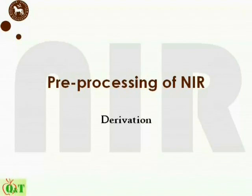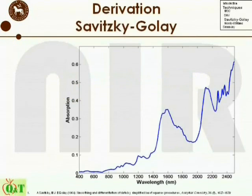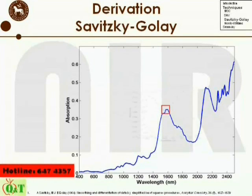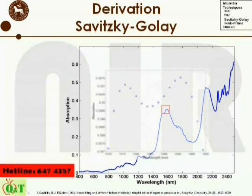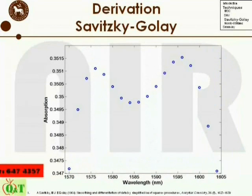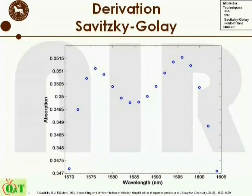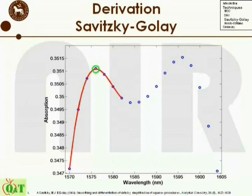Welcome back from the break. Savitzky-Golay is a method used for smoothing and derivation. Let's first have a look at how this method actually performs the smoothing. In the following example, we are only performing a smoothing of the spectra. We use seven points and a second-order polynomial smoothing function. As can be seen, this method scans through your spectra and estimates the smoothing and derivation for each point separately.